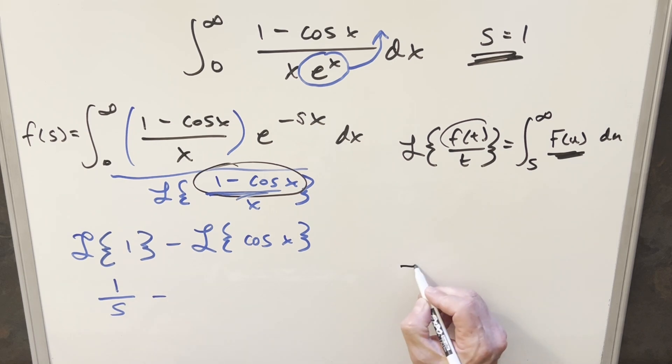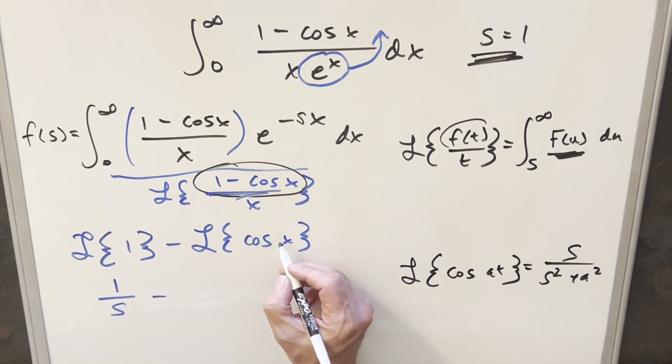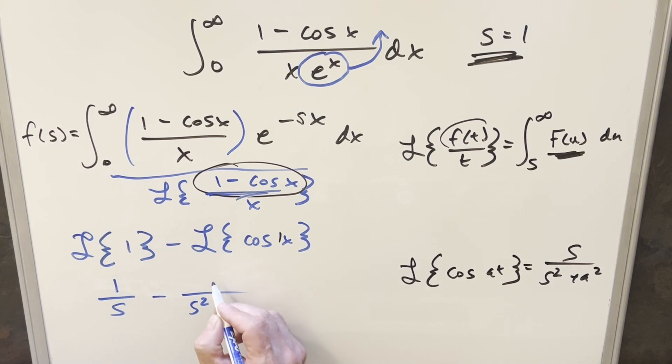Here we can use the formula if we have, if we're trying to find the Laplace transform of cosine at, our formula on this one is going to be s squared plus a squared with an s in the numerator. So here in this one, our a value, our constant in front is just a 1. So this is just going to become s squared plus 1 with an s in the numerator. Actually, that's going to be an s. Sorry about that. Bring in the s there. I was thinking of the sine formula there for a second.